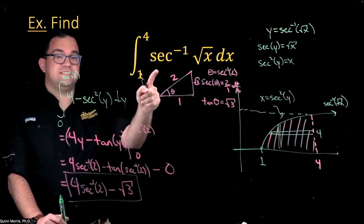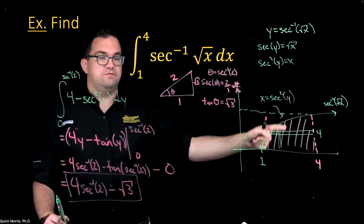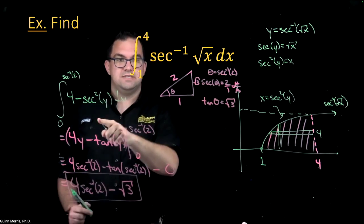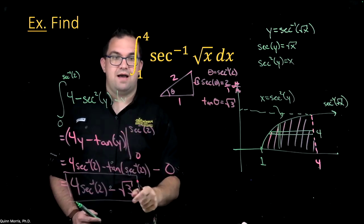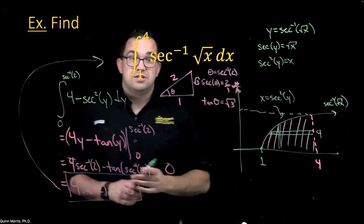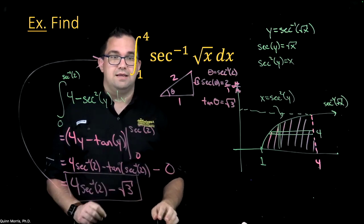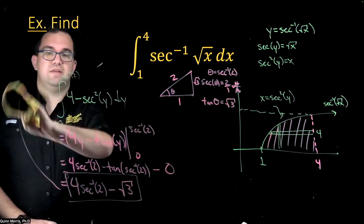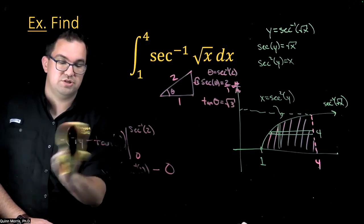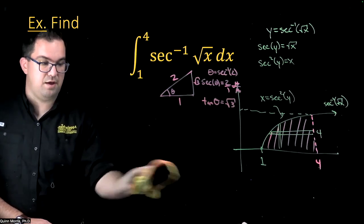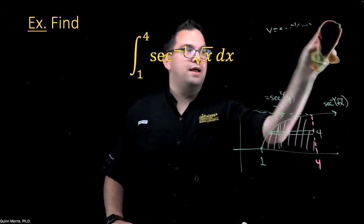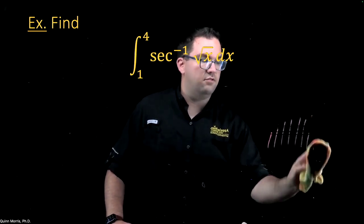We took this integral, thought of it as the area of a region, re-expressed that area by swapping the order of slicing, and got an integral we could directly evaluate. This is a very tricky method and not always guaranteed to work, but in some cases it's a really helpful technique. You'll have opportunities to practice these in homework, quiz, and a written assignment. If you have questions, reach out via email or we can set up a time to talk in more depth.